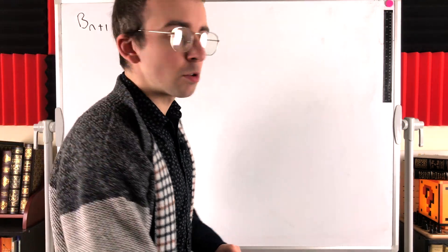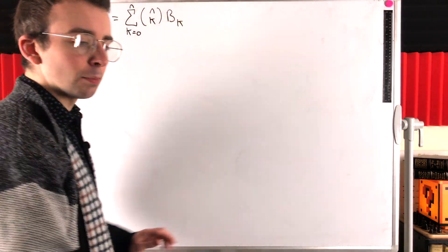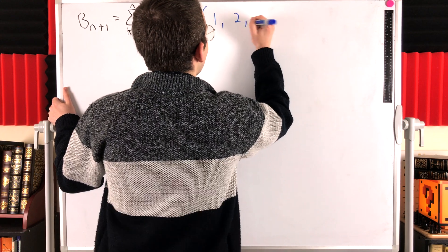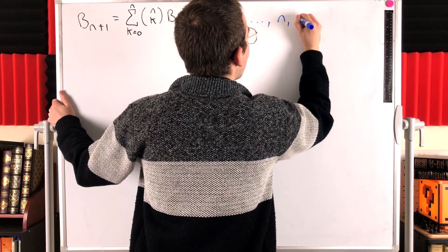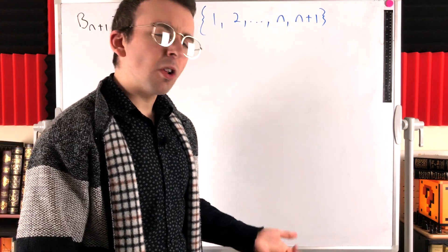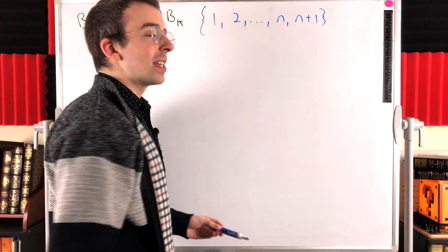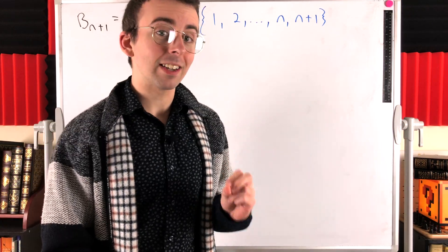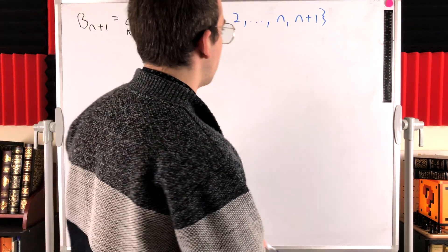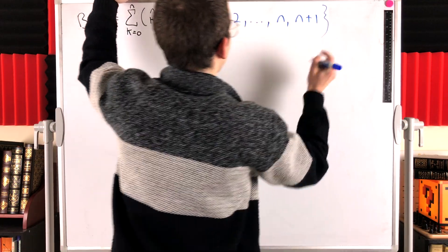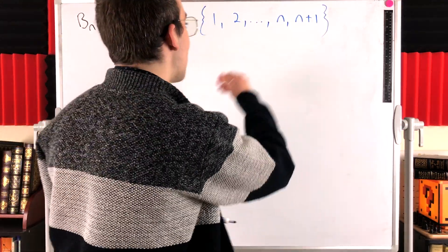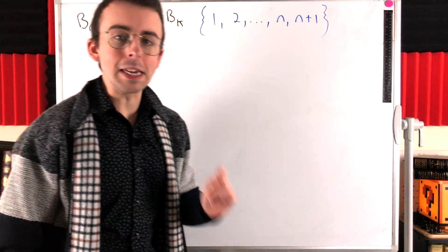We're going to get into it. It's a pretty straightforward proof, all things considered, and we'll start writing it in blue. So let's say we've got a set of N+1 elements, which we'll represent as a set containing 1, 2, and so on, all the way up to some N+1 element. The actual elements in the set don't matter — all that matters is the number of elements, which determines the number of ways we can partition it. We're trying to find the number of ways we can partition this generic set of N+1 objects — that's the bell number BN+1.